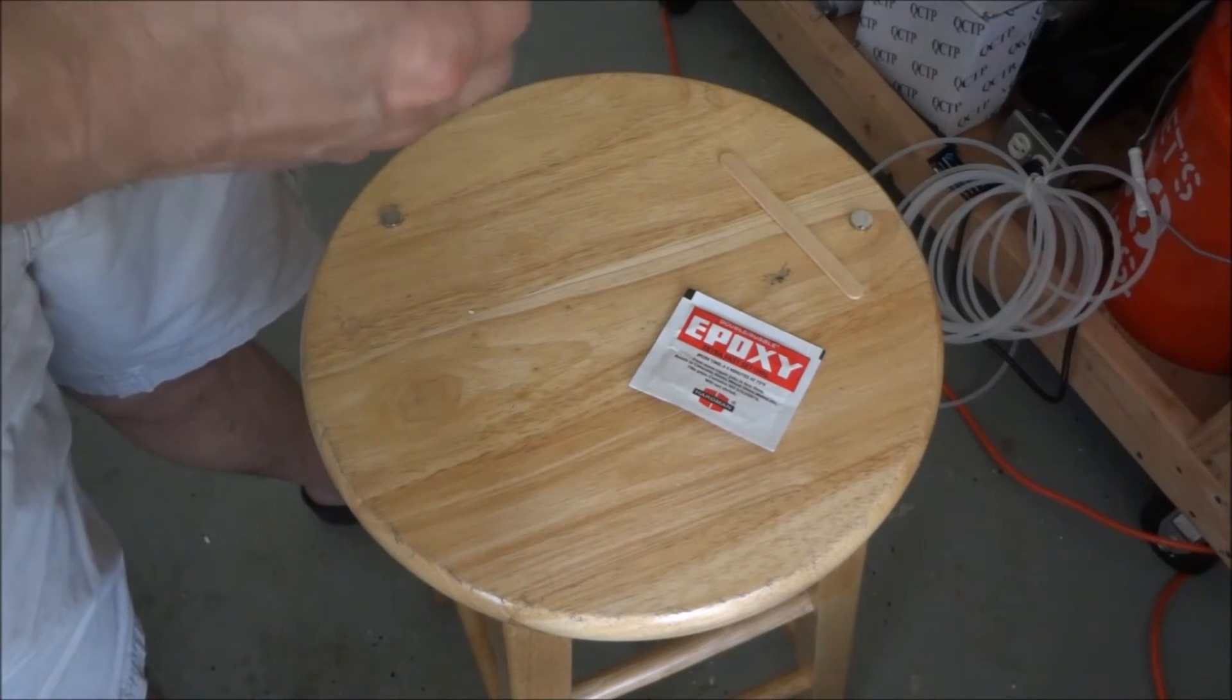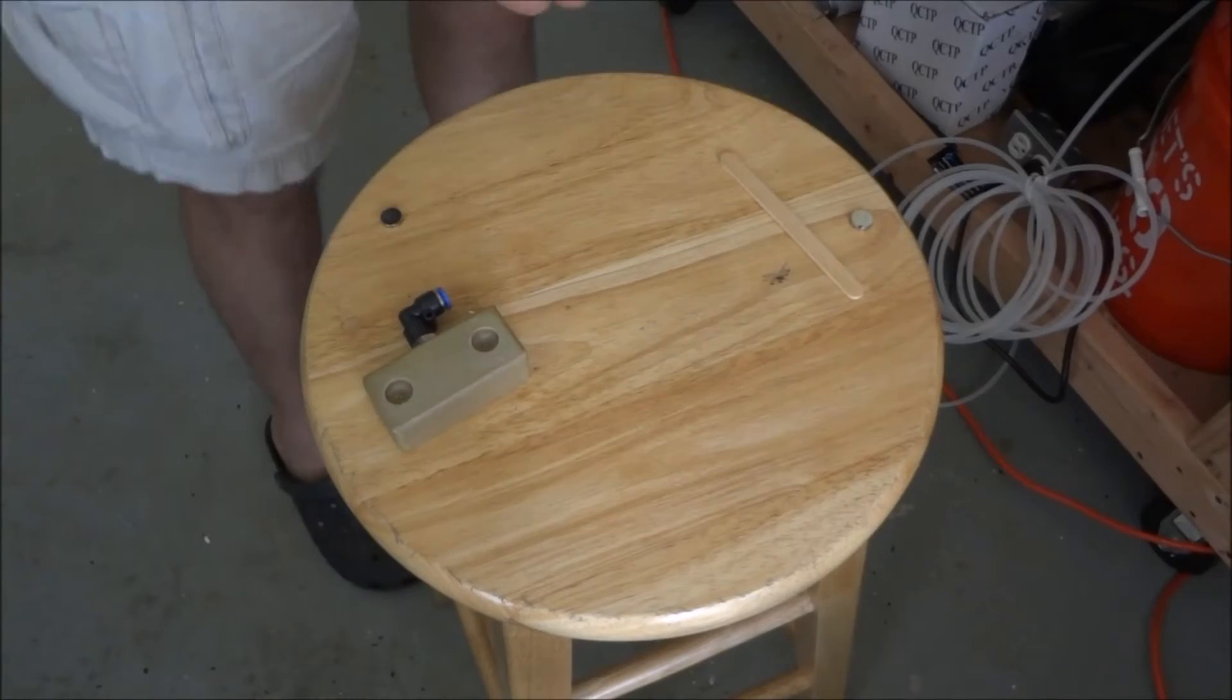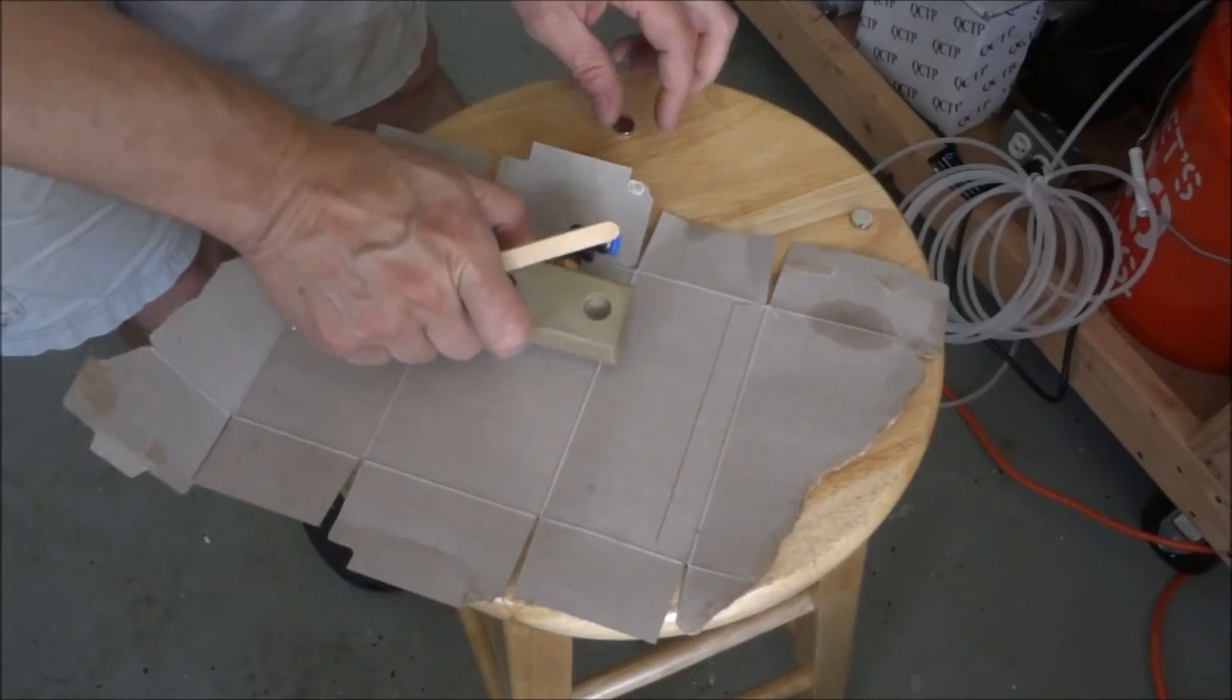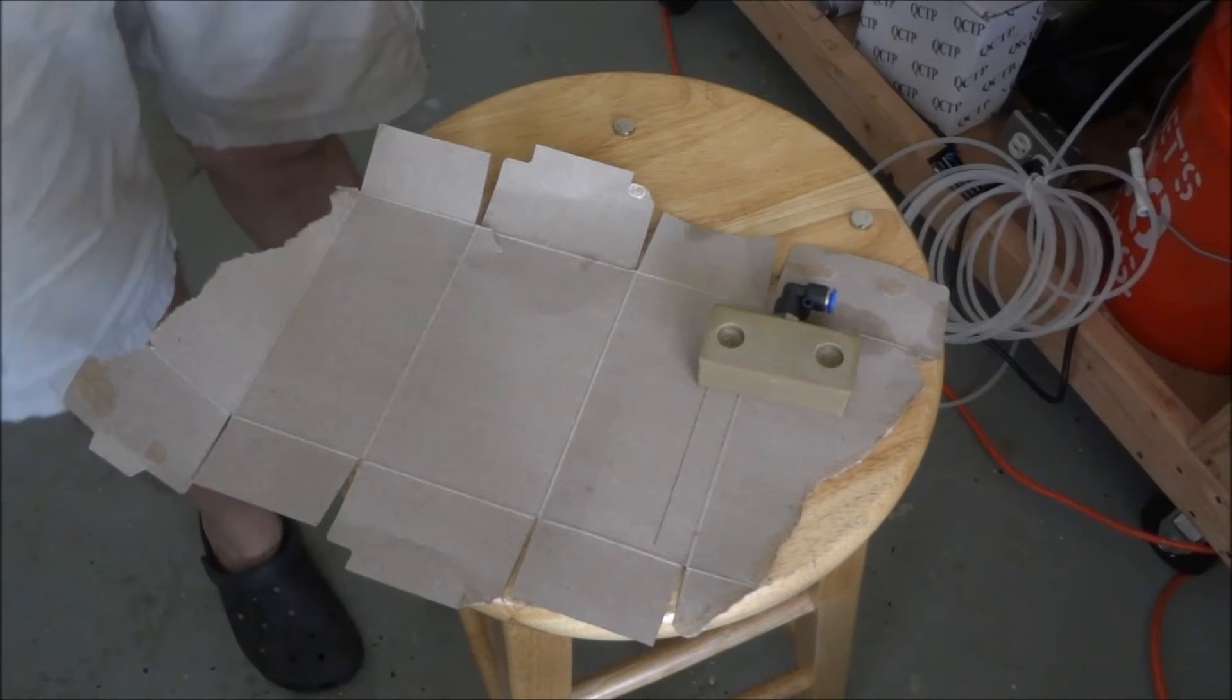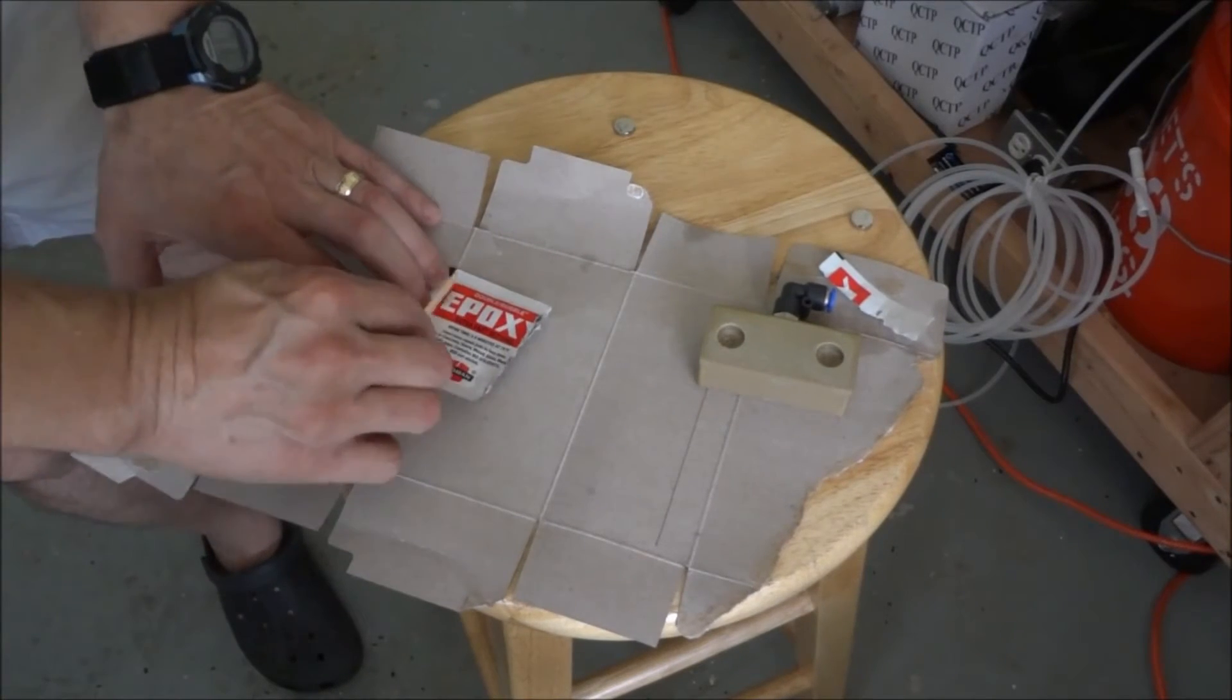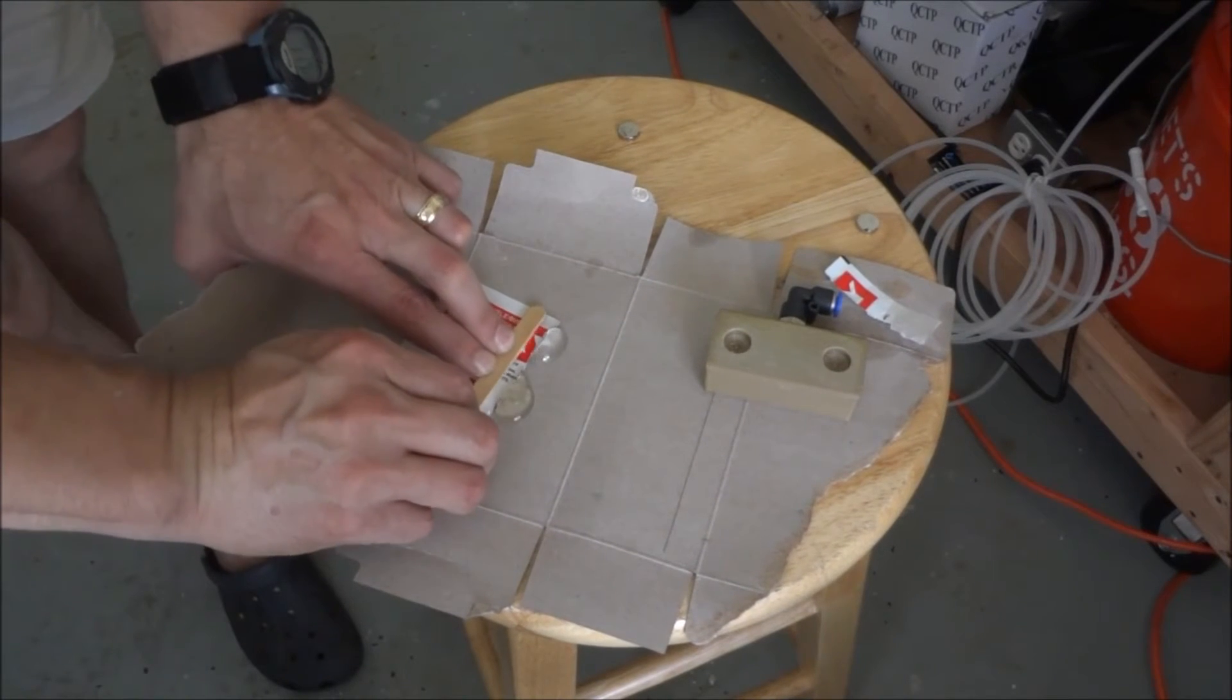What I want to do now is put the magnets in there. I'm going to use this epoxy to glue in the magnets. So what we need to do is tear this open, squeeze these two out, and mix them together.